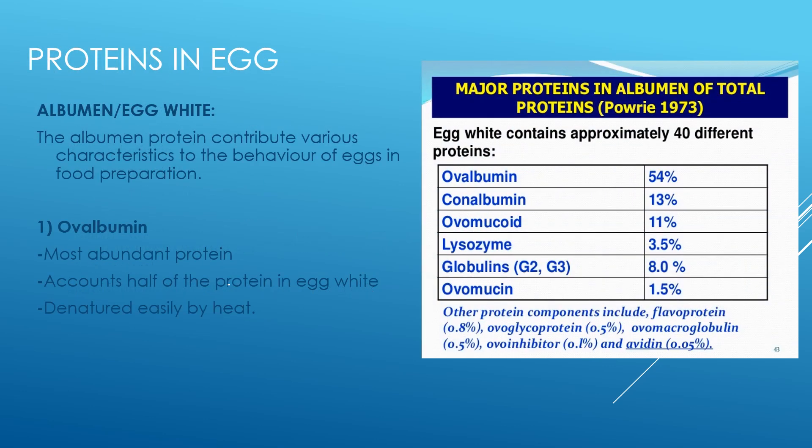Protein in egg is especially present in the whites. Albumins are also known as egg whites. The albumin protein contributes various characteristics to the behavior of egg in food preparation. Here is a table that represents the percentage of different types of protein present in egg white: ovalbumin, conalbumin, ovomucoid, lysozyme, globulins, and ovomucin. Their percentages are given. Other proteins may include flavoproteins, ovoglycoproteins, ovomacroglobulin, ovoinhibitor, and avidin.